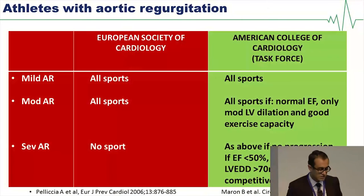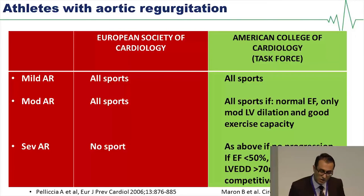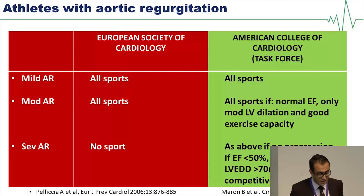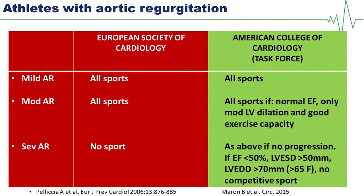Finally, aortic regurgitation has less restrictive guidelines for both mild and moderate cases. The Americans go into slightly more detail, specifying that if there is normal ejection fraction, only moderate aortic regurgitation, and good exercise capacity, then participation is acceptable. For severe aortic regurgitation, sport is allowed if there is no progression, but if ejection fraction falls below 50% or there are signs of left ventricular systolic or end-diastolic dilatation in males or females, the athlete should abstain from competitive sports.